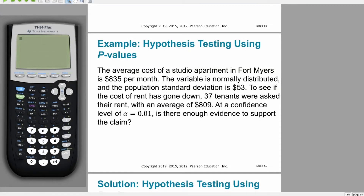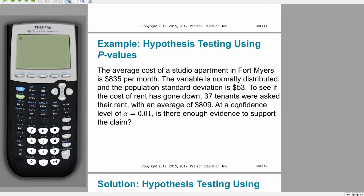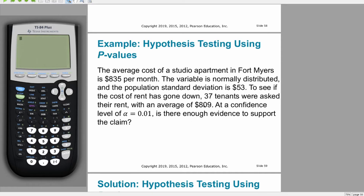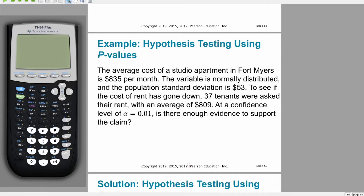We're going to start with a basic example of performing a z-test for a mean, where we're given that the mean mu is $835 a month with a standard deviation of $53. We're going to test to see if it has gone down using a sample of 37 and a sample mean of $809 at a level of significance of 1%.